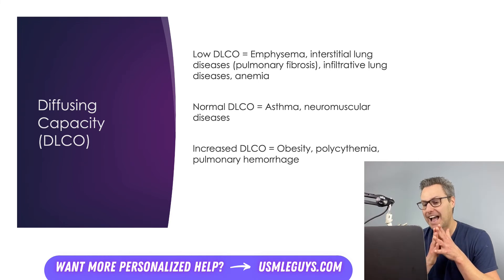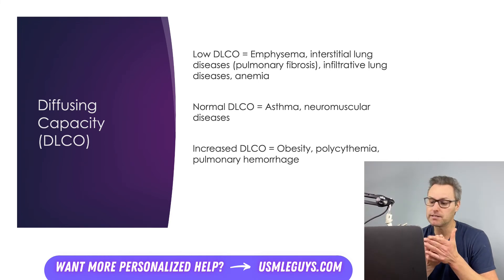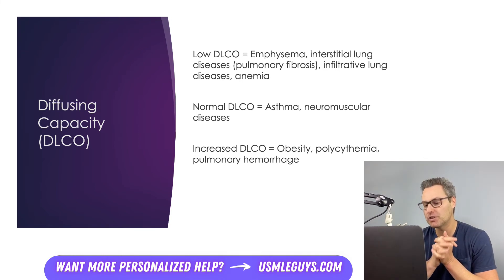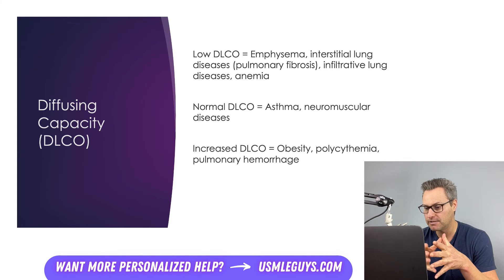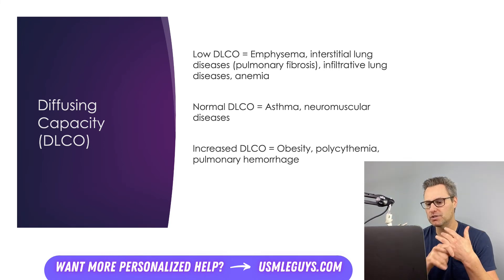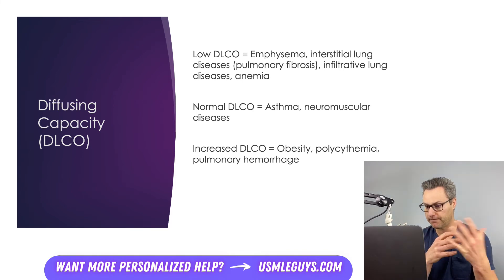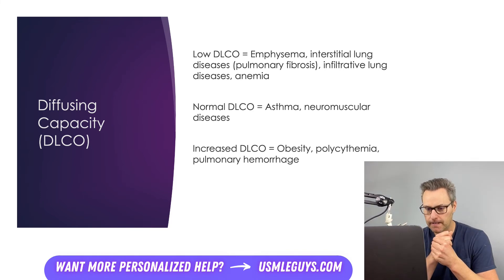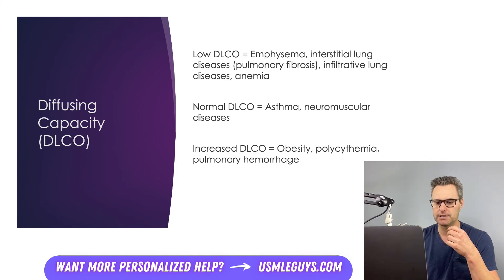Asthma, however, has intact capillary and alveolar structure, so you should expect to see normal diffusing capacity in asthma. Obese patients can have increased values for diffusion capacity, which is likely related to increased pulmonary blood volume. It's best to think of diffusing capacity intuitively — if the lungs have been replaced with fibrotic tissue, granulomas, or reduced alveolar surface area, it makes sense that diffusion is going to be decreased, giving you a low diffusing capacity.